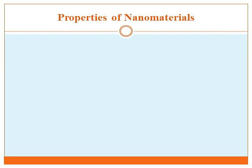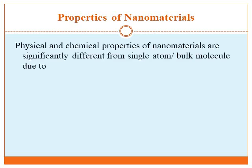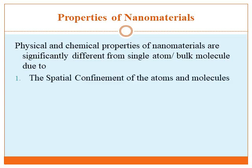The physical and chemical properties of nanomaterials are significantly different from a single atom or a bulk molecule. When you consider a single atom or bulk molecule, the physical and chemical properties are restricted, but in nanomaterials these properties are not restricted. The first reason is the spatial confinement of atoms and molecules. When reduced to 1–100 nanometers, the arrangement of atoms or molecules in space is completely disordered.